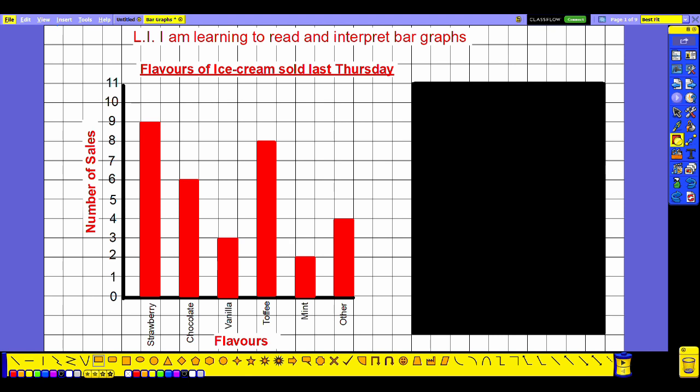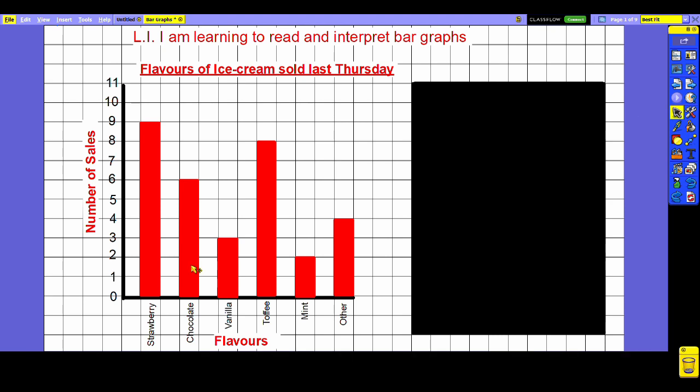In this case we can see that this bar graph here is showing us the flavors of ice cream sold last Thursday from an ice cream stand. The next place that you want to look are the axes to see what information is shown there. We can see that on the x-axis in this case there are the different categories, the different flavors of ice cream.